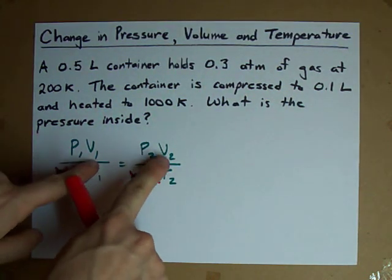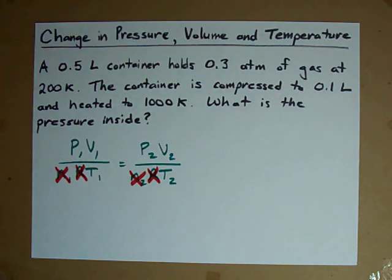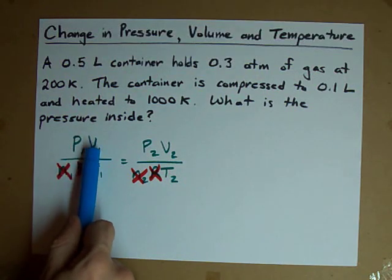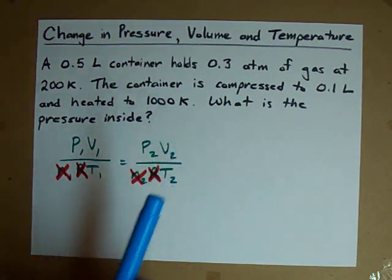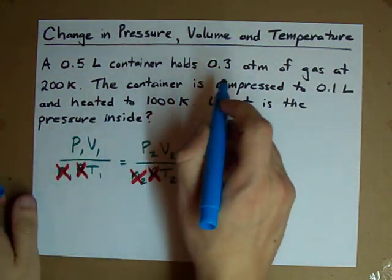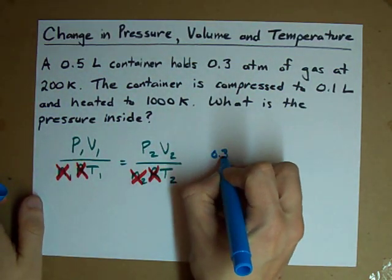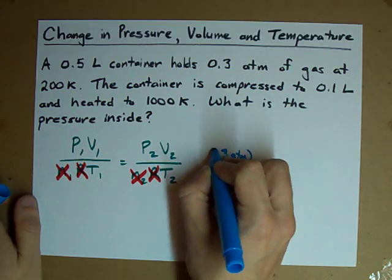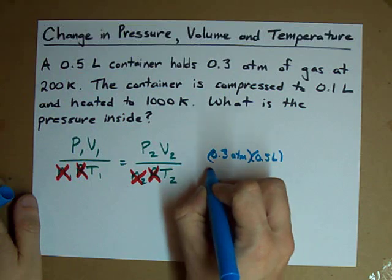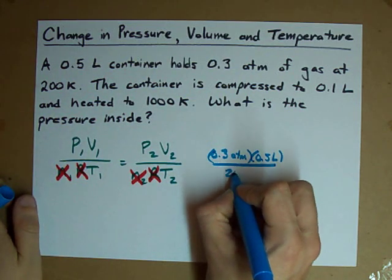Pressure is changing, volume is changing, and temperature is also changing, so I have lots of numbers to plug in. P1 V1 over T1 equals P2 V2 over T2. Let's fill in some numbers. Initial pressure, 0.3 atmospheres. Initial volume, 0.5 liters. Initial temperature, 200 Kelvin.